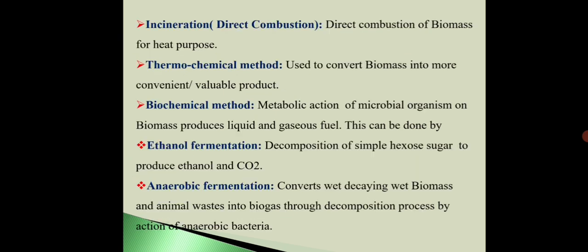Next is incineration, meaning direct combustion. Direct combustion of biomass is used for heat purposes. Next is the thermochemical method, used to convert biomass into more convenient or valuable products. The biochemical method uses metabolic action of microbial organisms on biomass to produce liquid and gaseous fuels, either by ethanol fermentation — decomposition of simple hexose sugar to produce ethanol and CO2 — or anaerobic fermentation, which converts wet, decaying biomass and animal waste into biogas by the action of anaerobic bacteria.